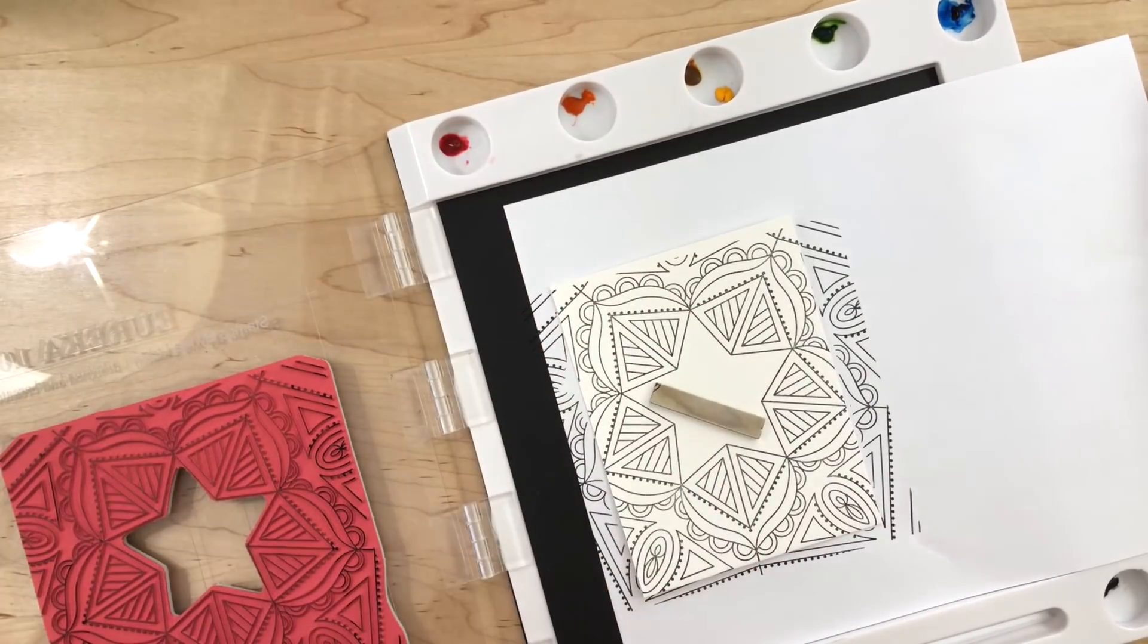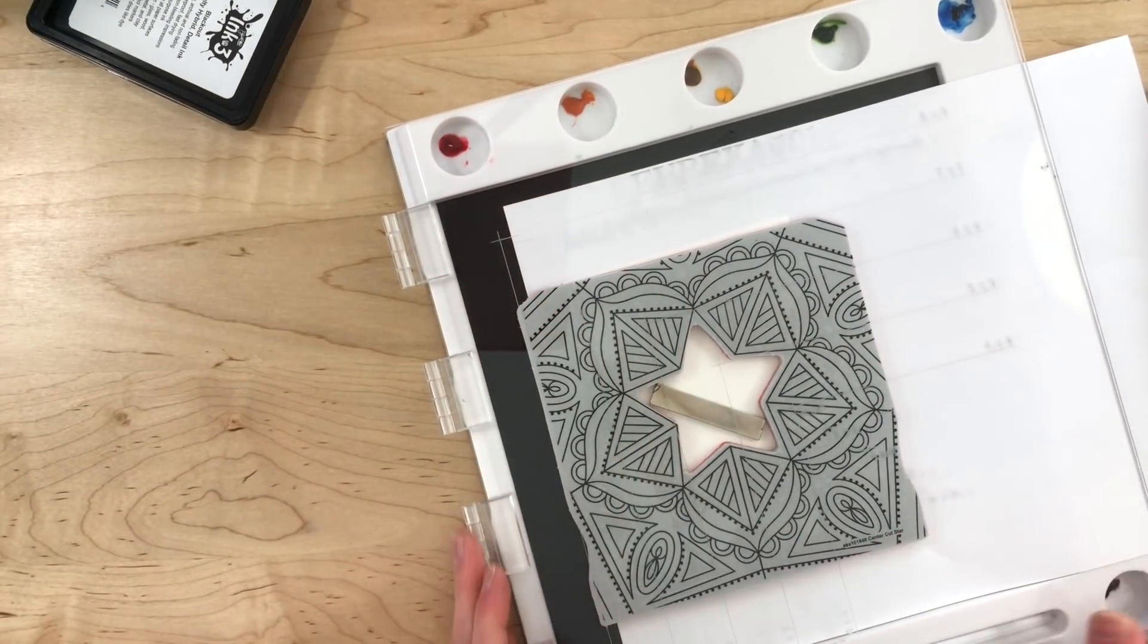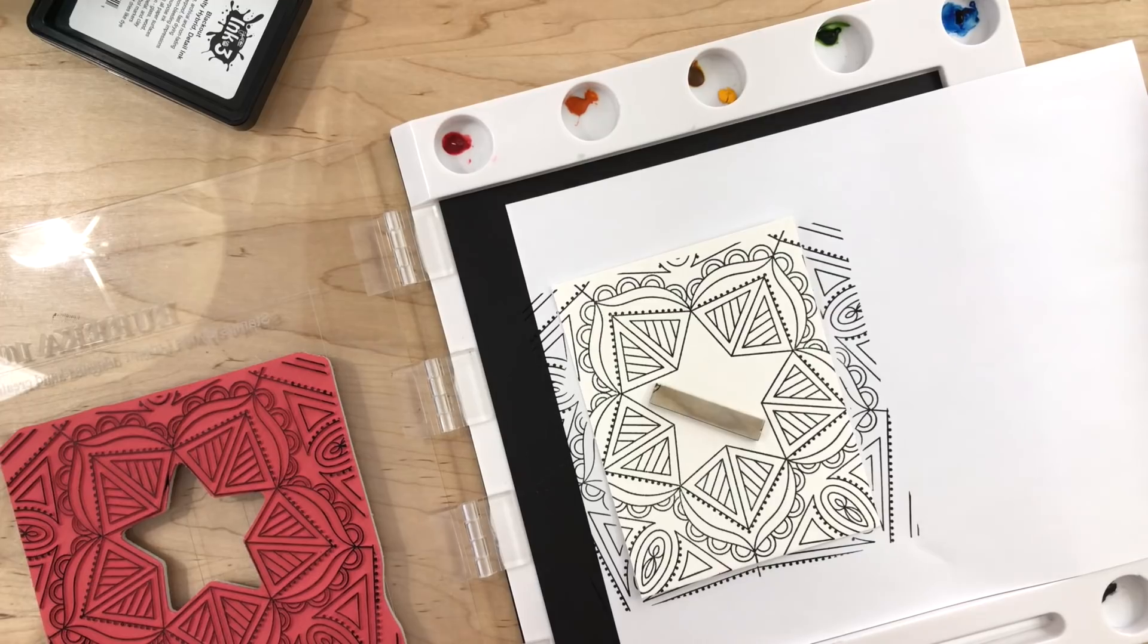Of course, watercolor paper is textured, so you don't often get a perfect impression. But again, this platform allows me to re-stamp over the same position again and again until I get a beautiful stamped impression.